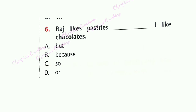Question 6: Raj likes pastries. Dash I like chocolates. Option A is correct: But I like chocolates. Both sentences have contrasting ideas — one likes pastries, whereas the other likes chocolates. So they are contrast ideas, and option A is correct: But.